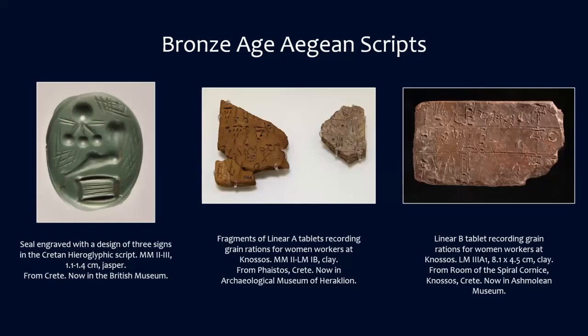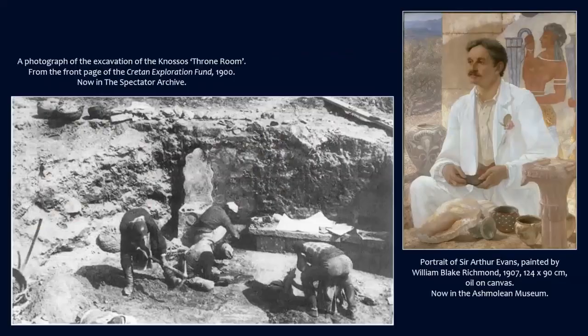Instead of relying on written explanations or historical documents to illuminate the meanings of Bronze Age art, art historians and archaeologists must rely on context and iconography. But the studies of Aegean iconography and contextual associations had to start somewhere, and they did not arise in a vacuum.